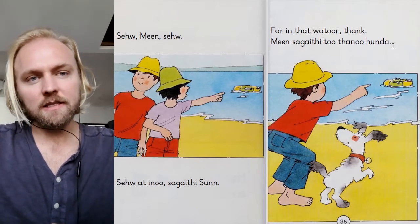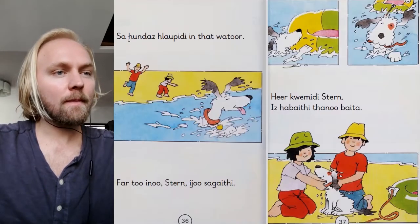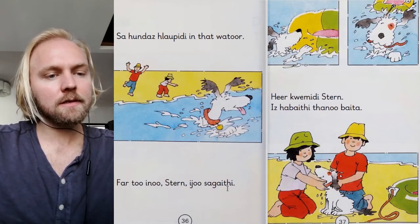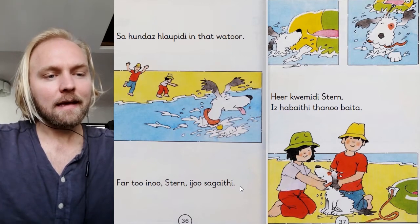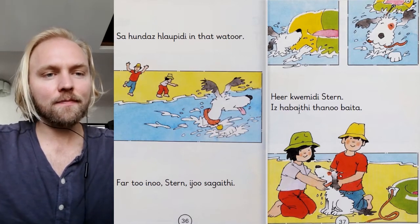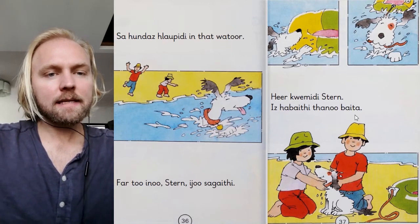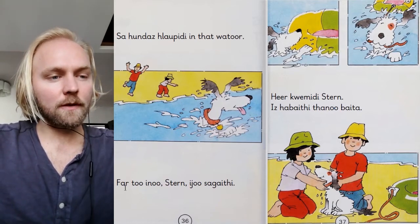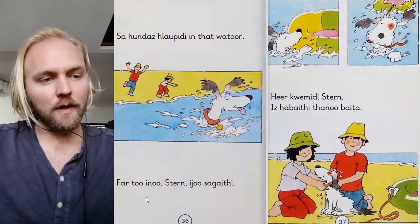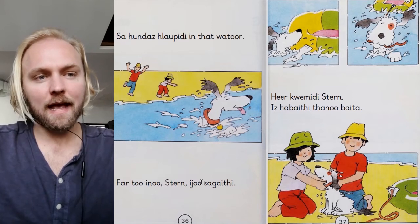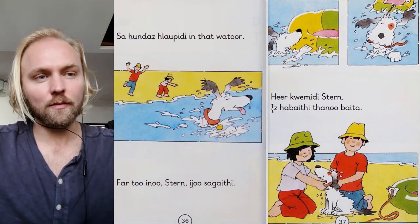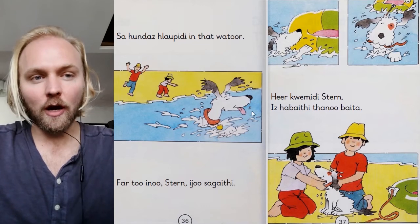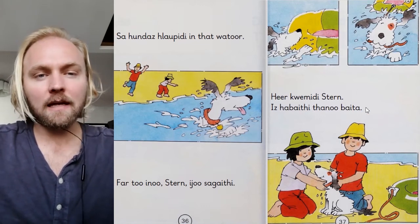The dog leaps into the water. 'Go to it — go to him, star,' they say — the two of them are saying this. Here quickly — star comes. Here comes star. He has the boat.